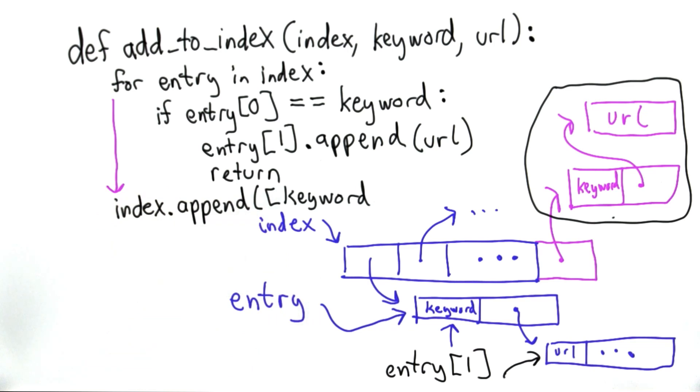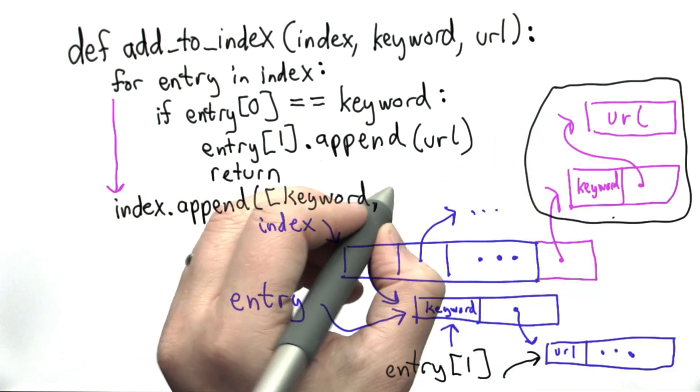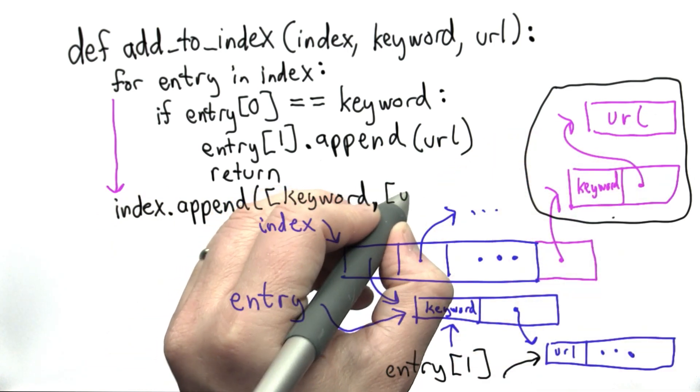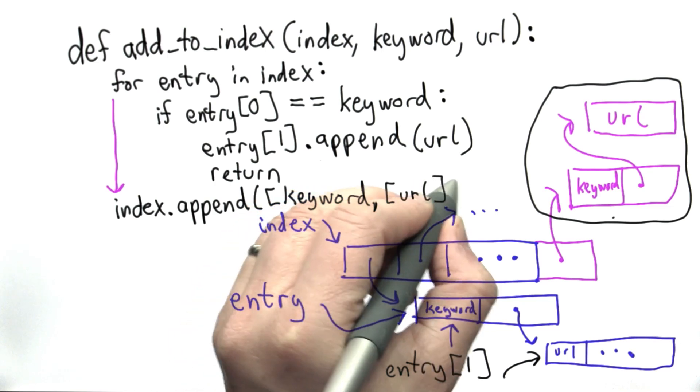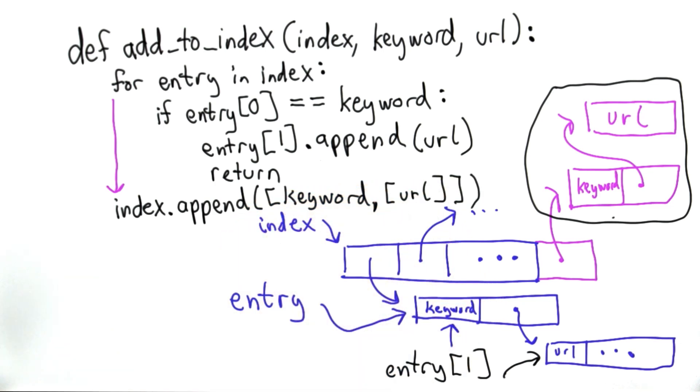So that's a list containing the value keyword as its first element. As the second element, it's a list containing just the single URL. So that's what we want to append in the case where we didn't find the keyword already in the index.